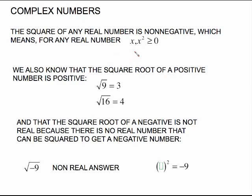One fact is that the square of any real number is non-negative, which means for any real number x, x² is greater than or equal to 0. 2 squared is 4, which is greater than or equal to 0. Negative 3 squared, the whole quantity squared, is a positive 9, which is greater than or equal to 0.